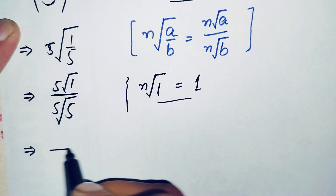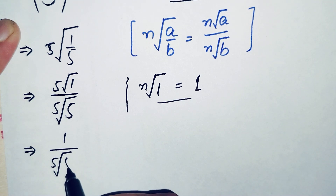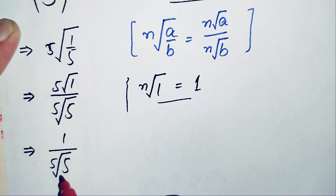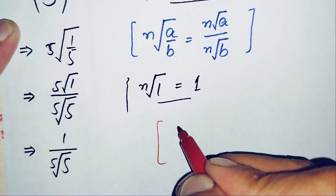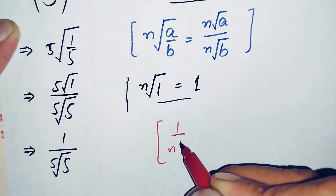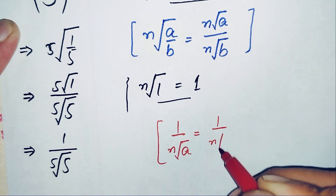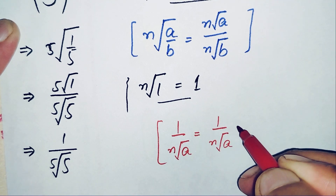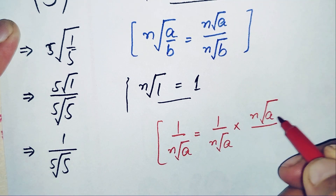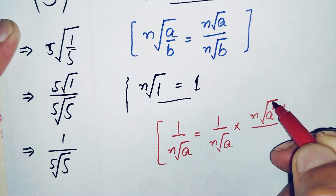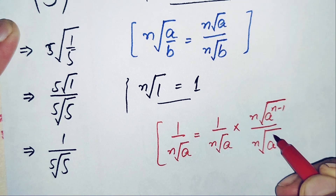So we now have 1 divided by the fifth root of 5. Here we will use a rationalization result: 1 divided by the nth root of a equals 1 divided by the nth root of a, multiplied by nth root of a raised to power n minus 1.